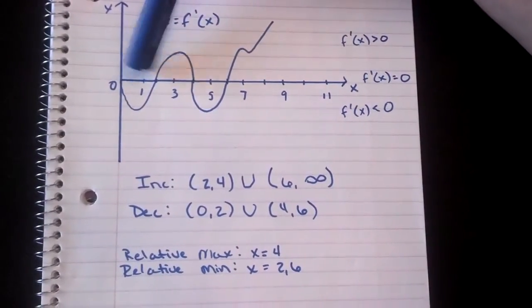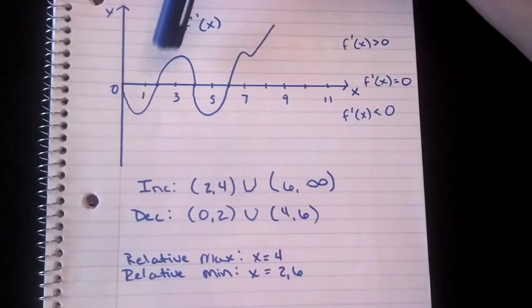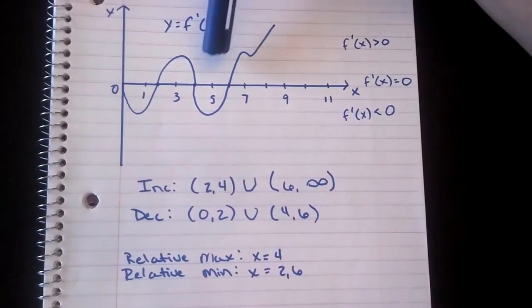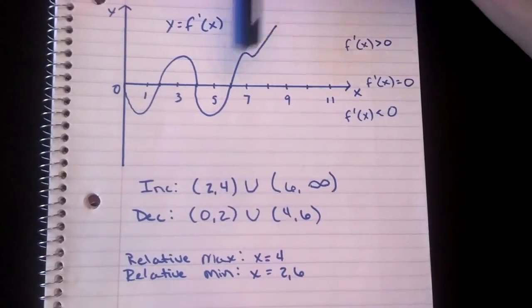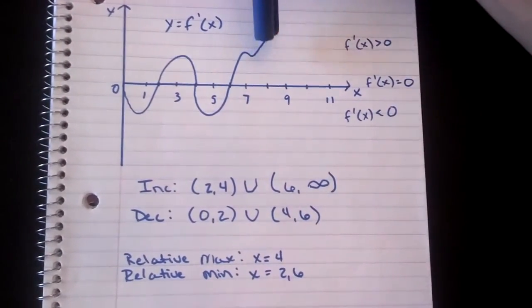The relative min is from 0 to 2, so one of the points is 2, and the other relative min is from 4 to 6, so the last point is at 6 right there, and that's solving the original function.